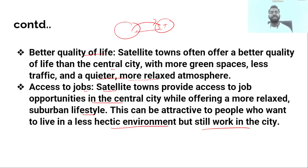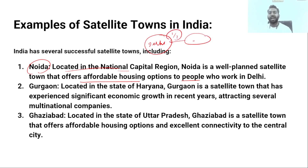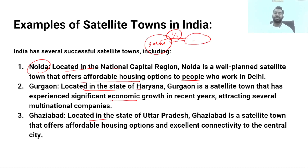People still work in the city but can take a bus available from the satellite town and reach the central city in 15 to 20 minutes. For example, people living in Haryana who work in Delhi — they drive or take a train to reach Delhi, working in the morning and arriving back at night. Similarly, Ghaziabad has developed as a satellite town near Delhi, where people commute to Delhi for work and return after a few hours.